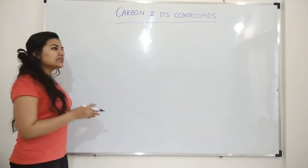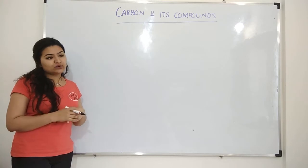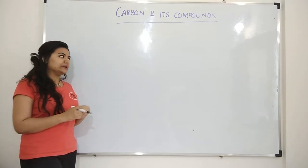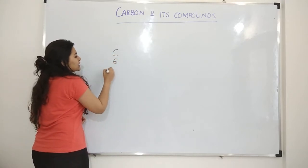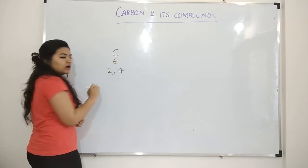If its atomic number is six, there are six electrons and there is a rule for stability. That also you have learnt in grade 9. So how do you distribute these six electrons of carbon?